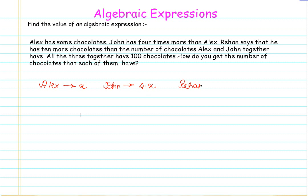Then we come across Rehan. Rehan says that he has ten more chocolates than the number of chocolates Alex and John together have. So Rehan has what Alex has plus what John has, and in addition to that, ten more chocolates. This gives us the expression 5x plus 10 for Rehan.